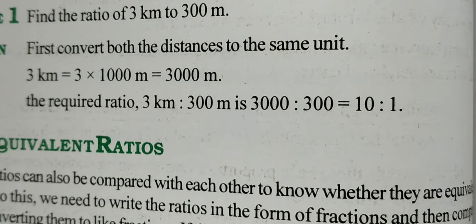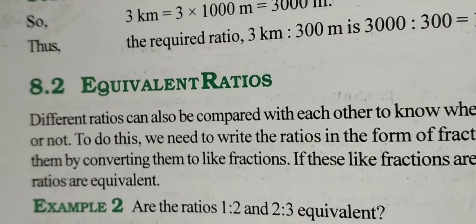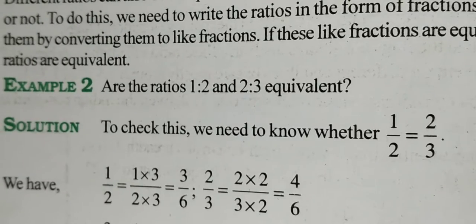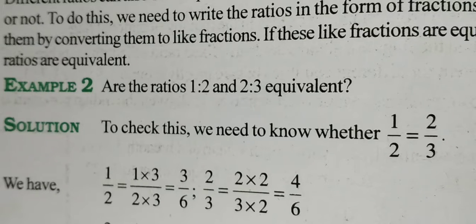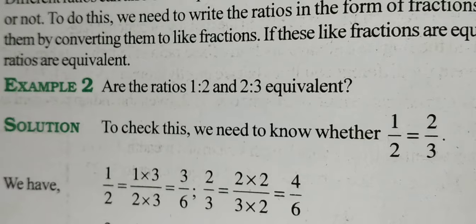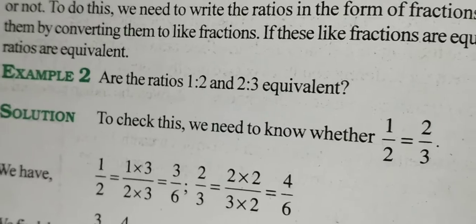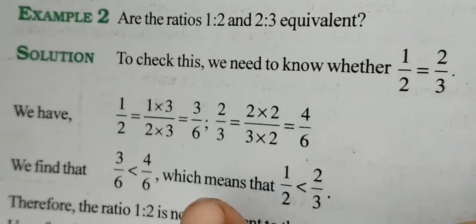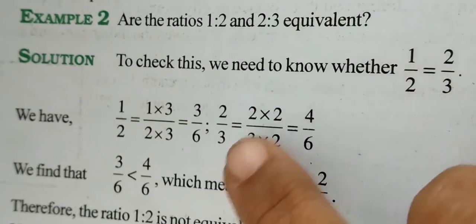Now we proceed with the next topic: equivalent ratios. Let's check example 2. Here you are comparing two ratios. You are asked to find out whether both ratios are equivalent or same or not. To check that, 1 is to 2 is written as 1 upon 2, and 2 is to 3 is written as 2 upon 3.